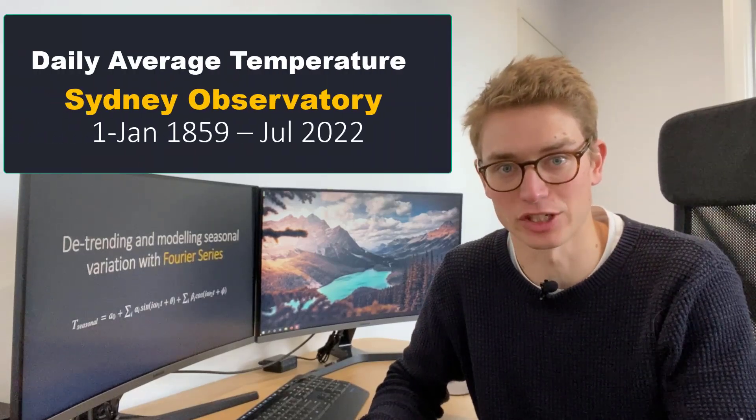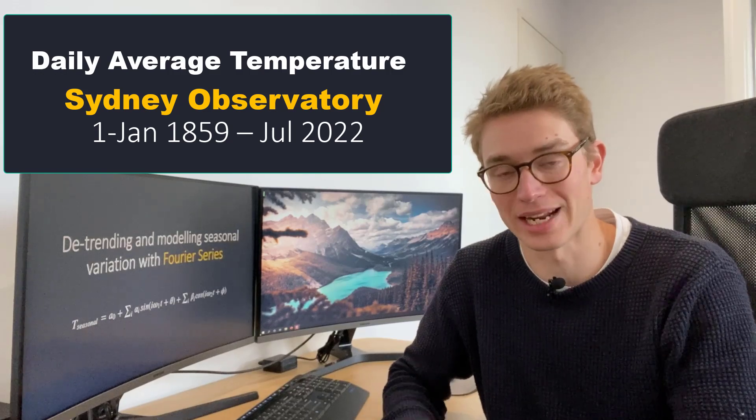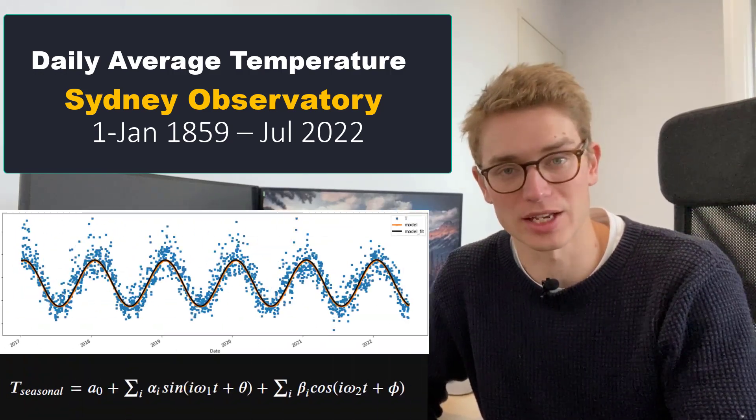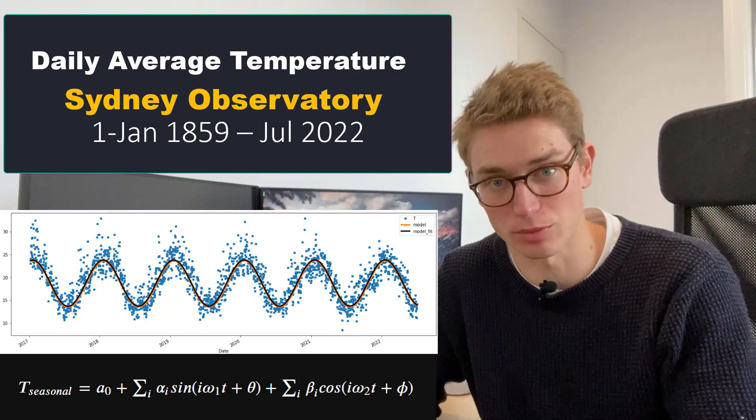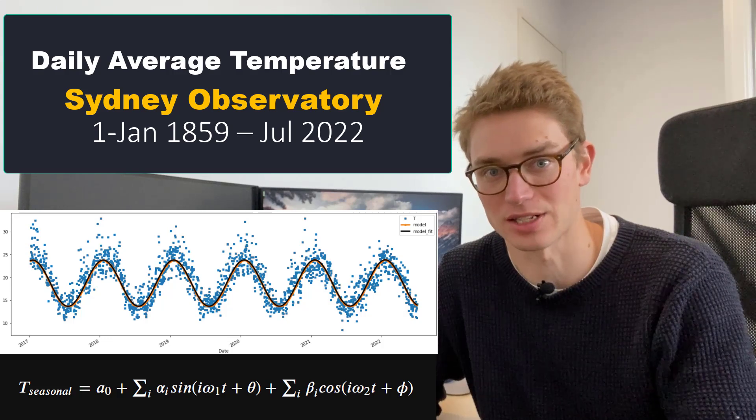Today, we're going to model the daily average temperature of Sydney Observatory. We're going to be looking at temperature data over the last 160 years. We're going to identify a long-term trend and then model seasonal variants using a Fourier series.